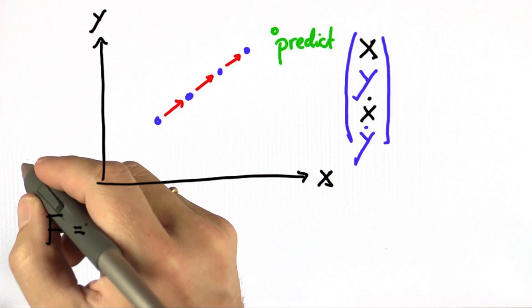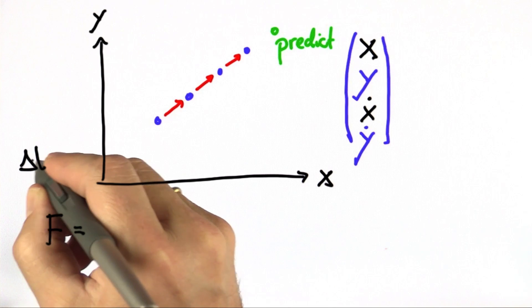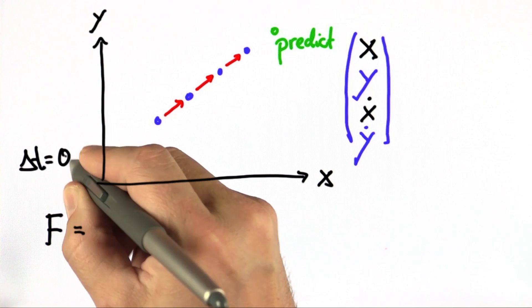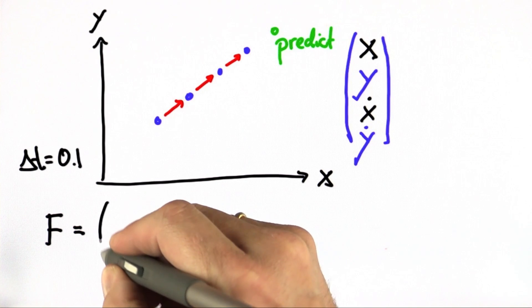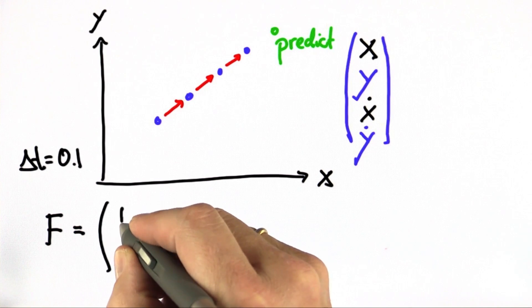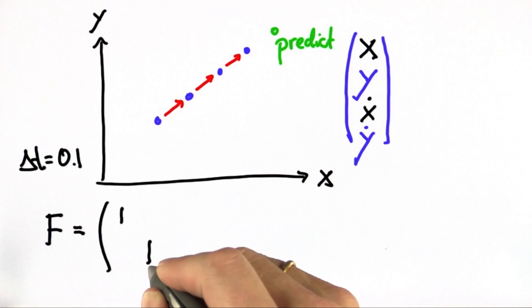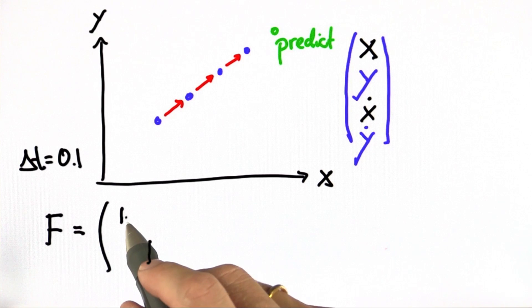And for delta t equals 0.1, our F matrix, the state transition matrix, had a main diagonal of 1, which means in expectation our location stays the same and our velocity stays the same.